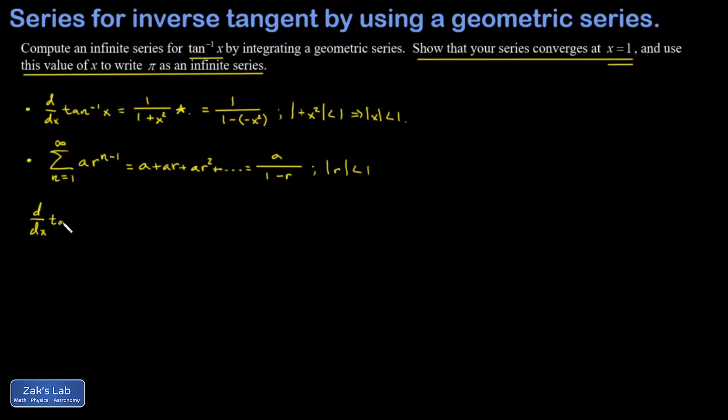Let's express our derivative of the inverse tangent function as an infinite series. All we have to do is plug in that r is equal to negative x squared. I can pull a factor of negative 1 out of this, and that gives me negative 1 to the n minus 1, and then x to the 2n minus 2.